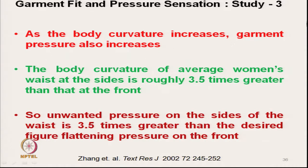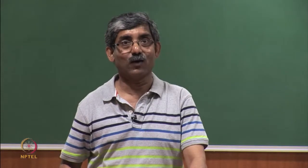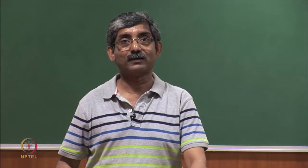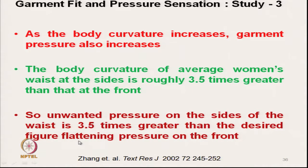In Study 3, another study concluded that as the body curvature increases, the garment gives higher pressure. The body curvature of an average woman's waist at the side is roughly 3.5 times greater than at the front. That means at the side there will be higher pressure, and the waist at the side gives 3.5 times higher pressure than the front. This is directly related to the curvature.